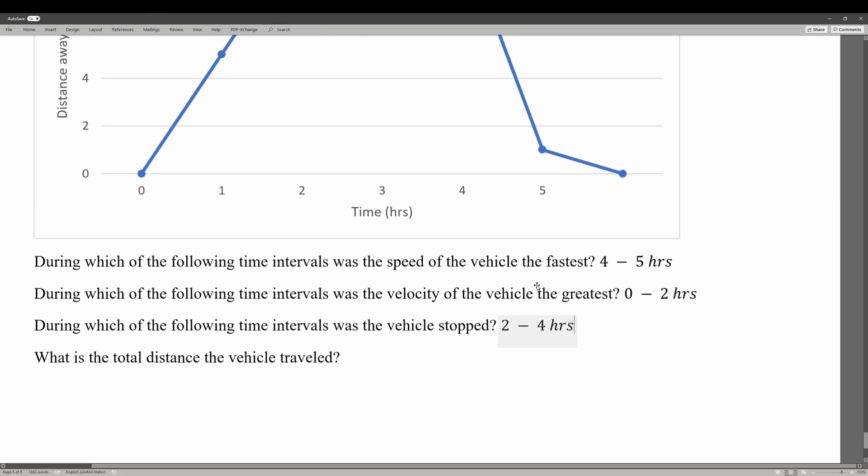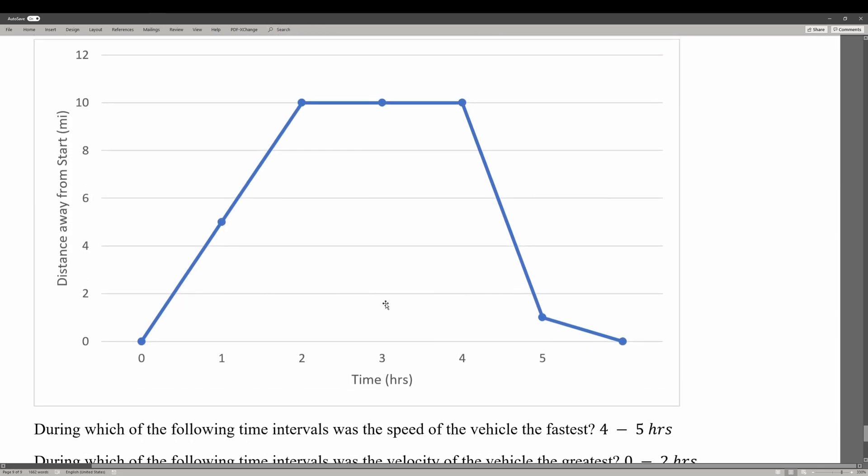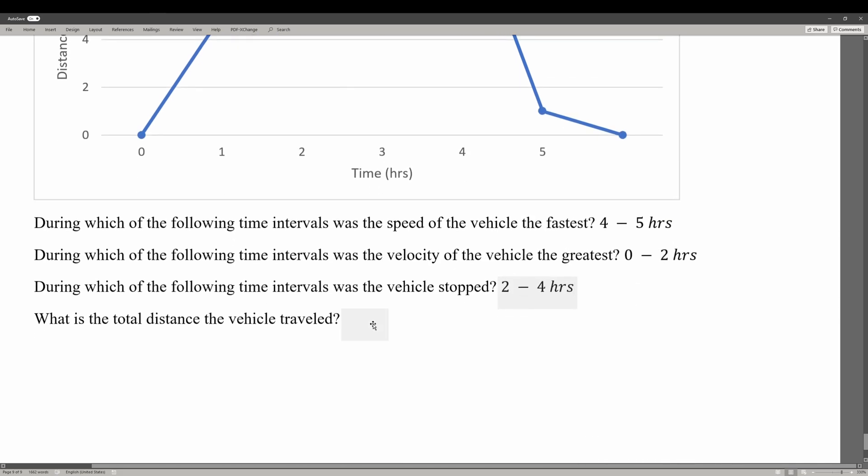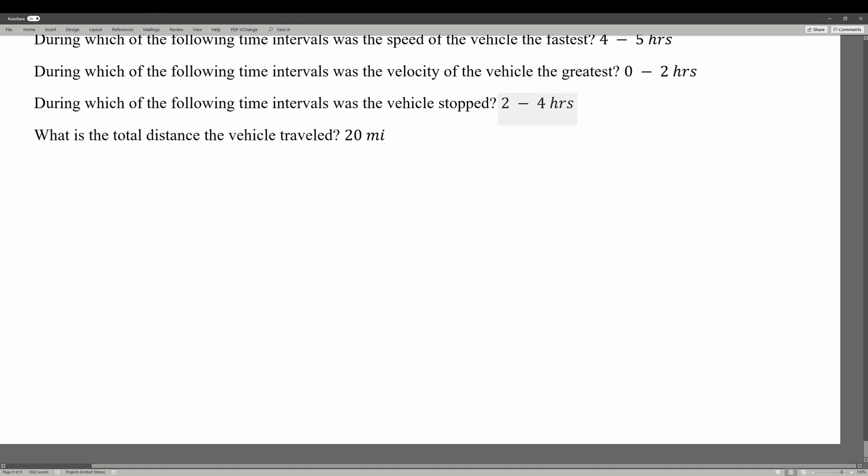And finally, what's the total distance the vehicle traveled? In order to get to the stop point, 10 miles, and then we went all the way back, another 10 miles. So 20 miles in total. That's all I have for today. If you guys have any questions, feel free to leave them in the comments below. Also, be sure to sign up for Carat Tutoring below, and have a nice day.